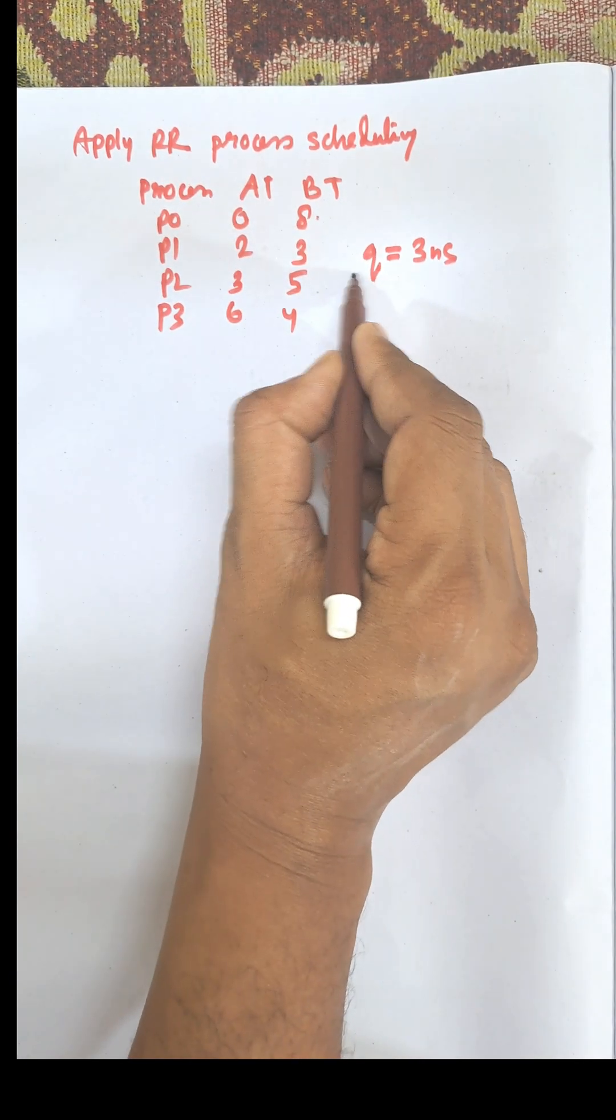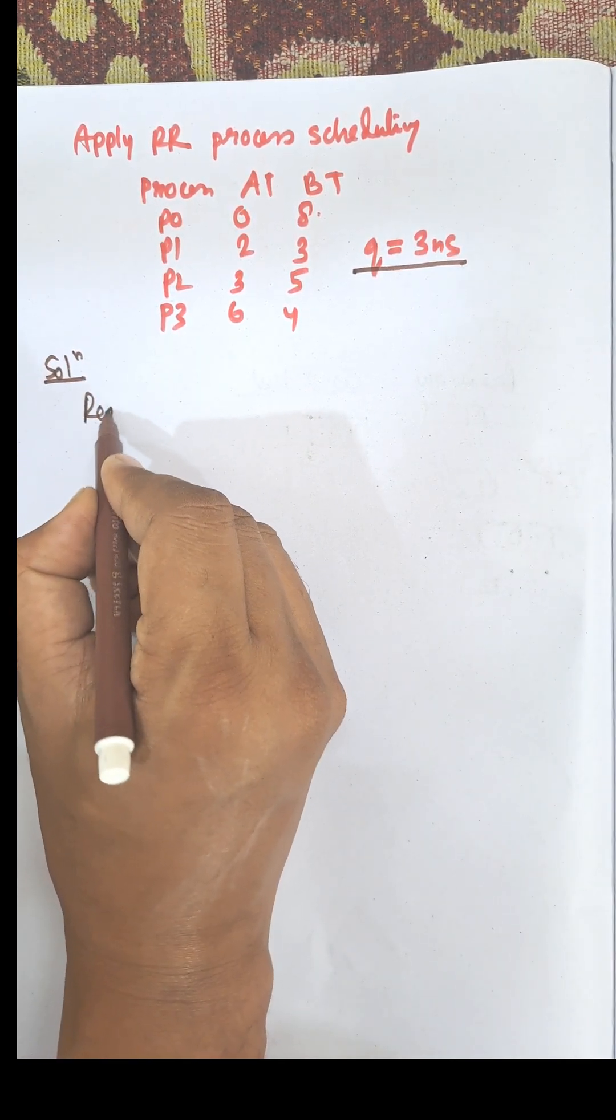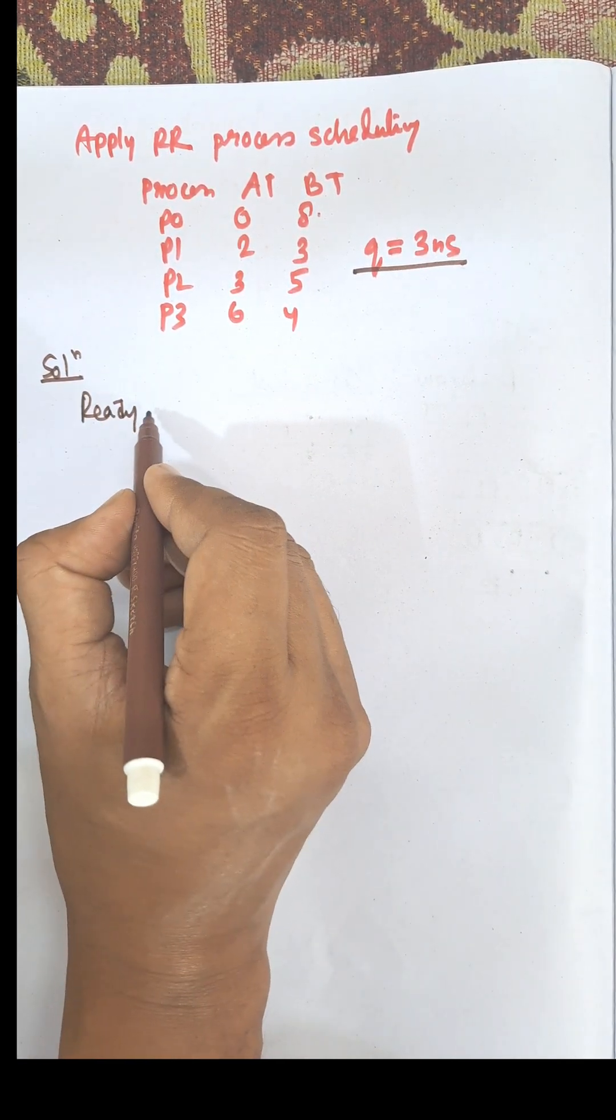Round Robin is a preemptive process scheduling algorithm. In this algorithm there is a quantum time. We need to draw the ready queue first. The ready queue depends on the arrival time.